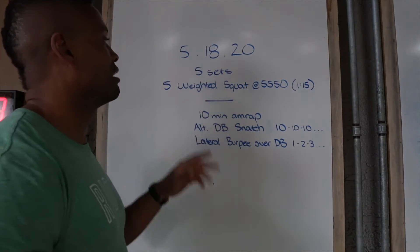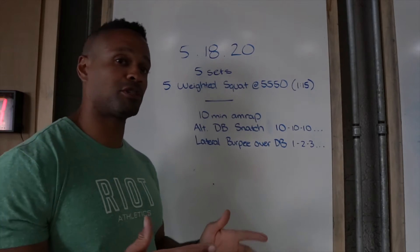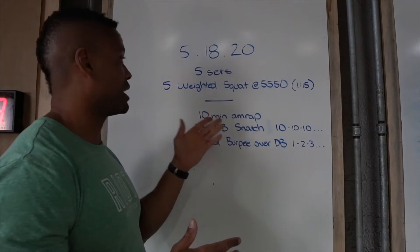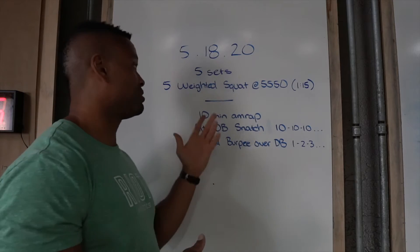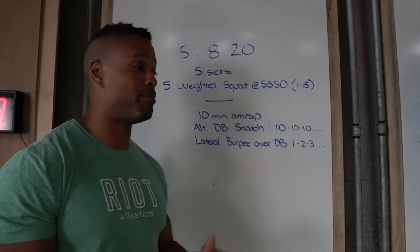We have five sets of weighted squats, and the reason I put weighted here is because depending on what you have at your disposal will dictate how you're gonna handle that. So this might be a barbell, this could be a dumbbell, this could be a kettlebell, this could be a child or a bag of flour.